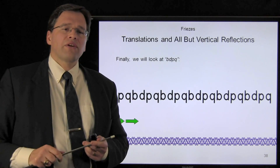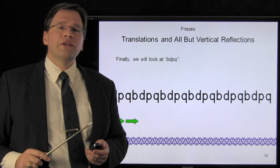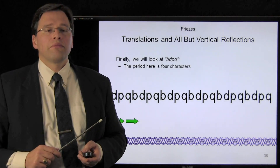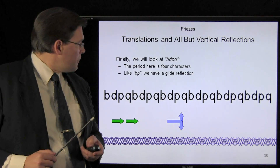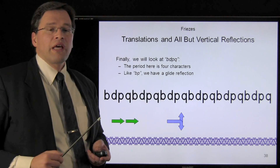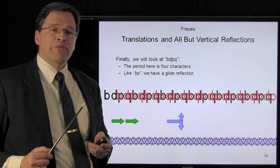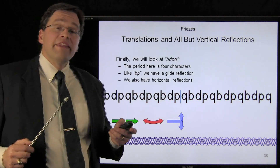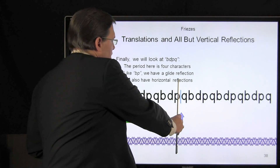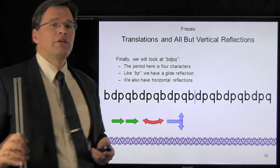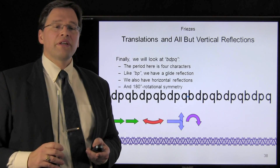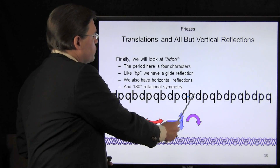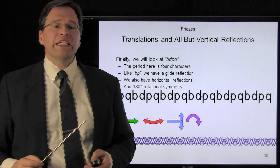Finally, let's look at the seventh group. The letters are BDPQ in alphabetical order, and here the period is four characters. Like BP, it does have a glide symmetry — we can move it over half a period, two characters, and reflect it vertically. In this case, however, we also have horizontal reflections, with two lines of reflection within each period. And we also have 180-degree rotational symmetry, with two points of rotational symmetry within each period.